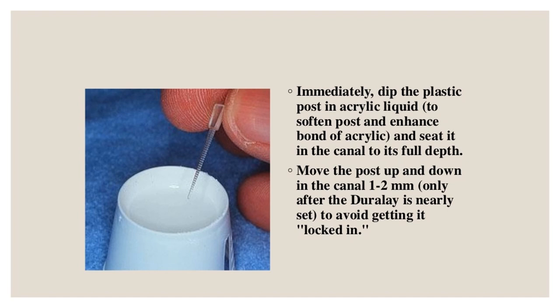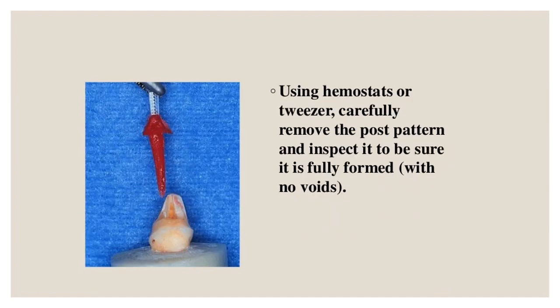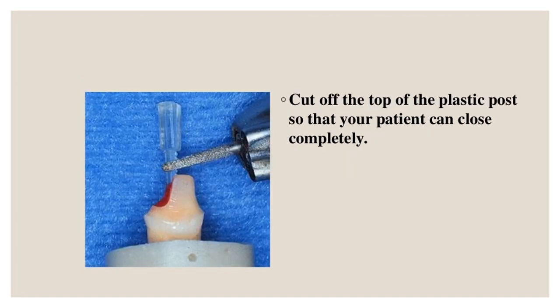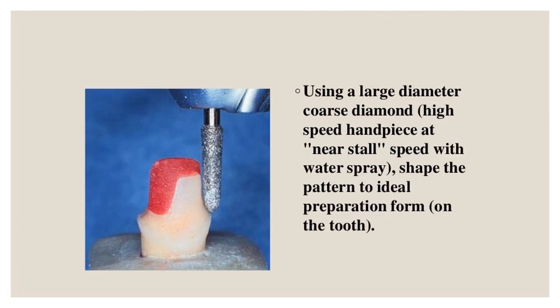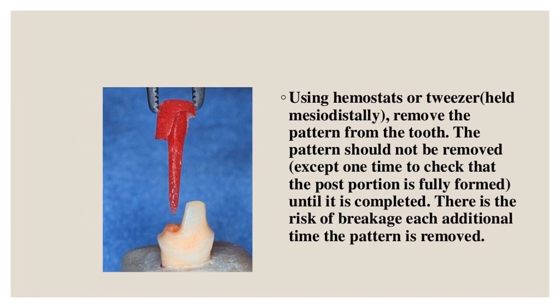Using hemostats or tweezers, carefully remove the post pattern and inspect it to ensure it is fully formed with no voids. Cut off the top of the plastic post so that the patient can close completely. Using a large-diameter coarse diamond high-speed handpiece at near stall speed with water spray, shape the pattern to ideal preparation form on the tooth. Remove the pattern using hemostats held mesio-distally. The pattern should not be removed more than once to check formation — each additional removal risks breakage.